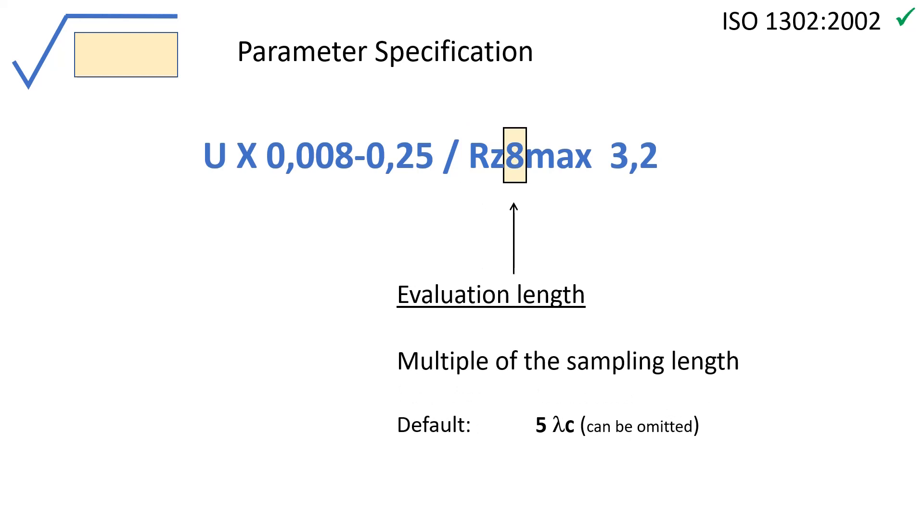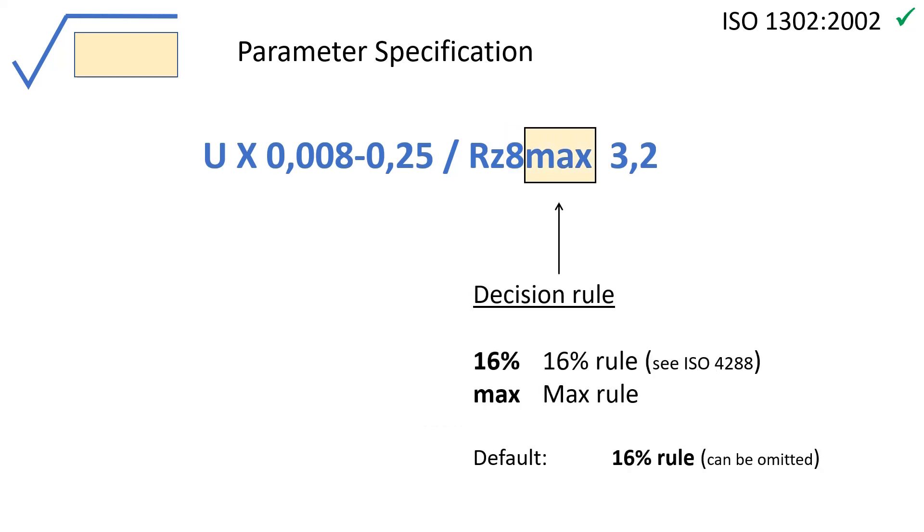In some cases, when the parameter needs to be calculated on a different evaluation length, it is specified as a multiple of the sampling length, here eight times the lambda c cutoff of 0.25 mm. This is not a frequent practice, but it can be found on some drawings. Then the decision rule for the interpretation of the limit is defined. By default, it is the 16% rule. We will study this rule in detail later.